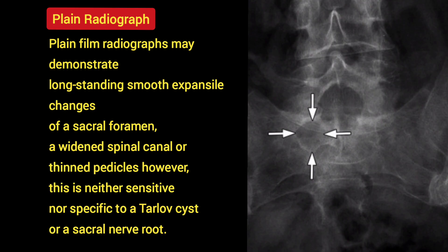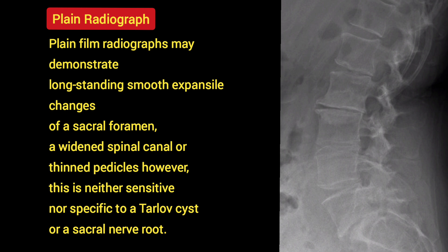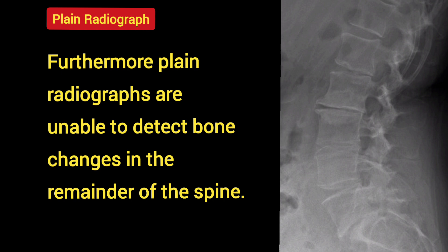Imaging Features: Plain film radiographs may demonstrate long-standing smooth expansile changes of a sacral foramen, a widened spinal canal, or thin pedicles. However, this is neither sensitive nor specific to a Tarlov cyst or a sacral nerve root. Furthermore, plain radiographs are unable to detect bone changes in the remainder of the spine.